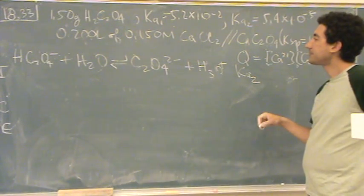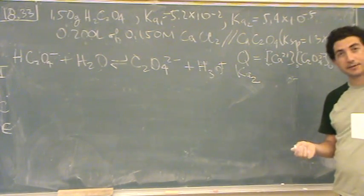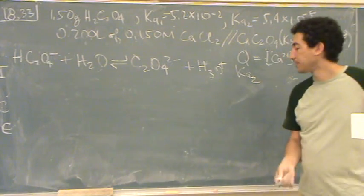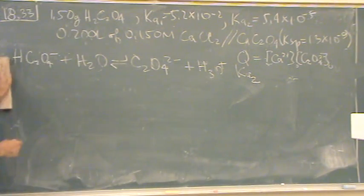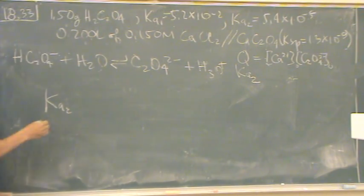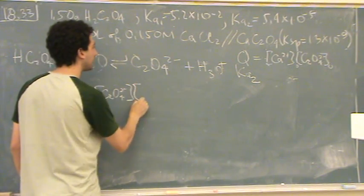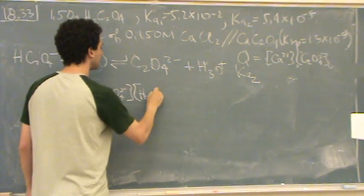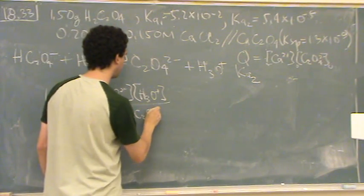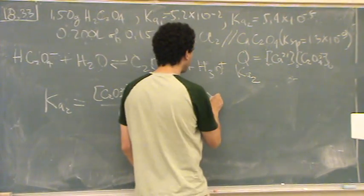So here, what you do when you're doing a polyprotic, you don't need an ice table for the second loss of the proton. So what you would do, you would say, Ka2, so no ice table necessary, C2O4 2 minus times H3O plus over HC2O4 minus.